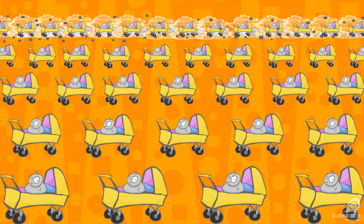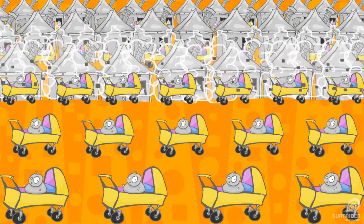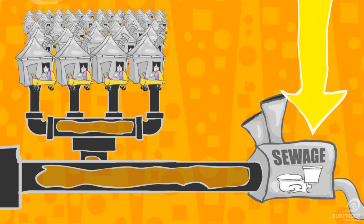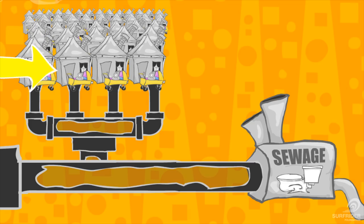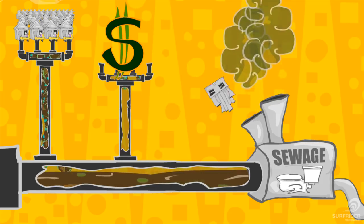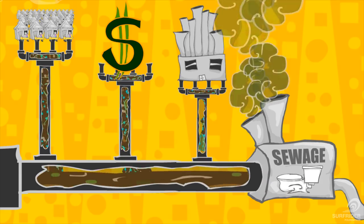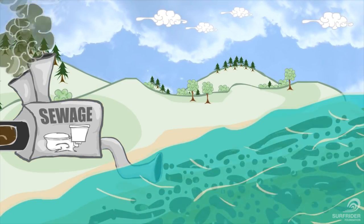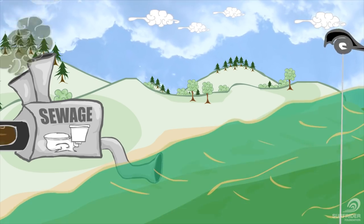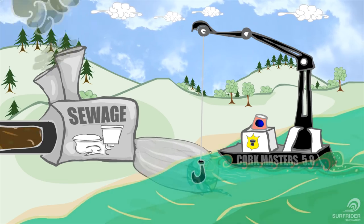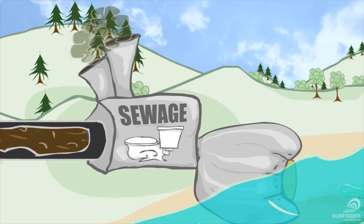As population grows, urban development increases, which in turn increases the amount of water that goes down the drain. Traditional sewer systems collect all the wastewater from our homes and offices and send it to a centralized treatment plant. After residents, businesses, and industry have used the water — often only once — it's treated and released into the ocean or other nearby lakes and streams. Many cities are struggling with the dual problem of stricter regulations to decrease water pollution and an ever-increasing volume of wastewater.